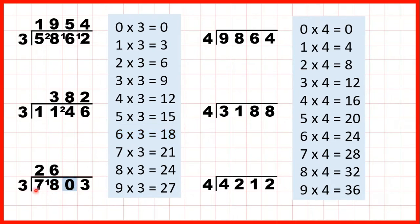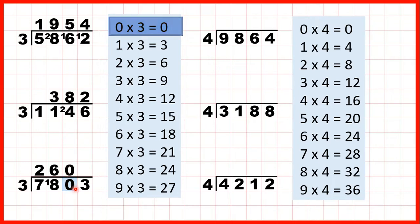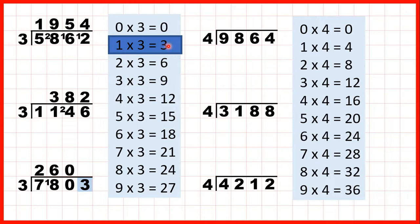Now we have 0 divided by 3. Well 0 times 3 is 0, so we just move straight on to the next digit. 3 divided by 3 — well of course 3 is in the 3 times table, and because that's 1 times 3 we write 1 in our answer line. We don't have any remainder and no more digits to divide, so our answer is 2,601.